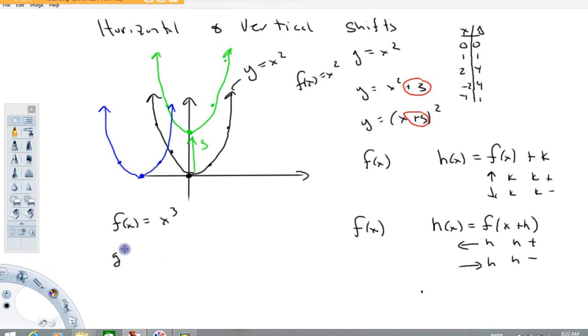If we had a function g of x, that was equal to x minus 5, the quantity cubed. Now you'll notice the relationship here between g and f, this is equal to f of x minus 5. This graph g would be equivalent to f, except it'd be shifted right five units.